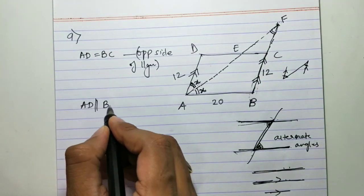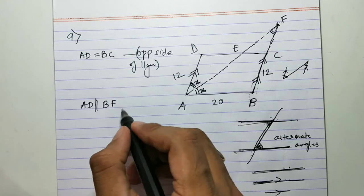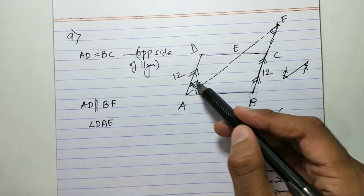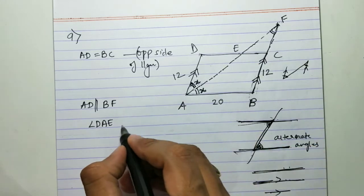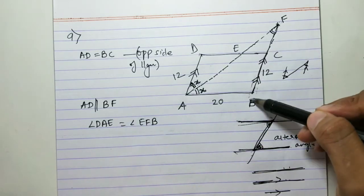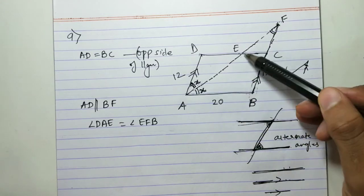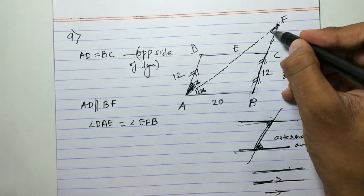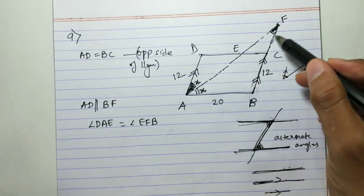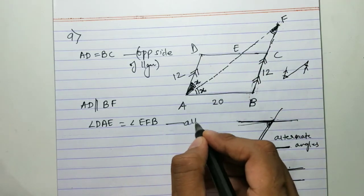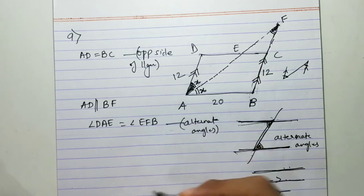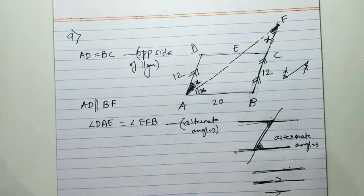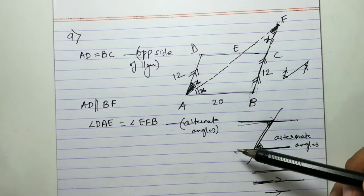So I'll write that AD is parallel to BF. Therefore angle DAE equals angle EFB — these are alternate angles. Since the bisector made angle DAE equal to x, angle EFB is also x.